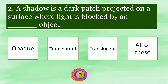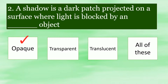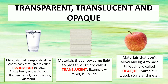A shadow is a dark patch projected on a surface where light is blocked by an opaque object. Transparent materials completely allow light to pass through — examples: glass, water, air, cellophane sheet, clear plastics, diamond. Translucent materials allow some light to pass through — examples: paper, bulb, ice. Opaque materials don't allow any light to pass through — examples: wood, stone, metal.